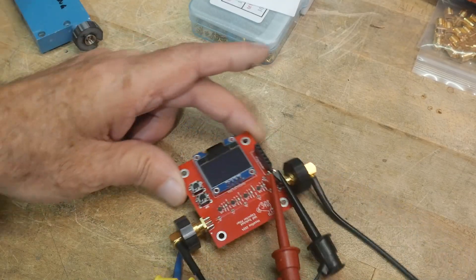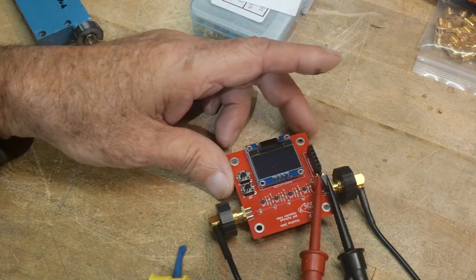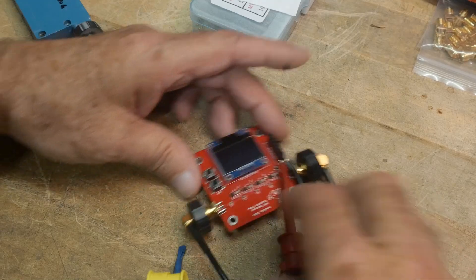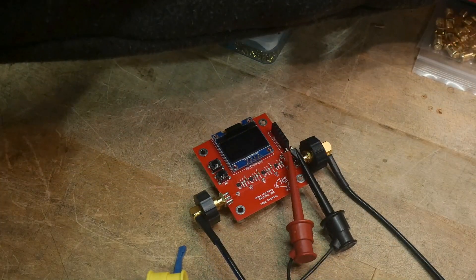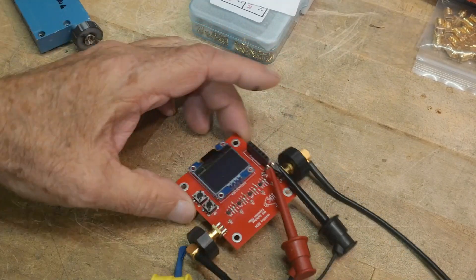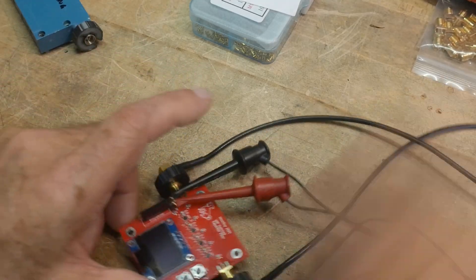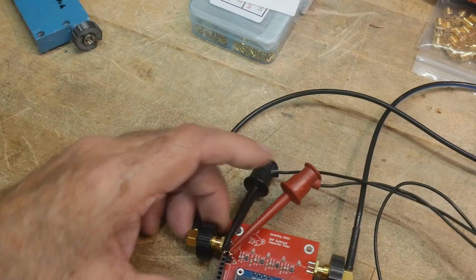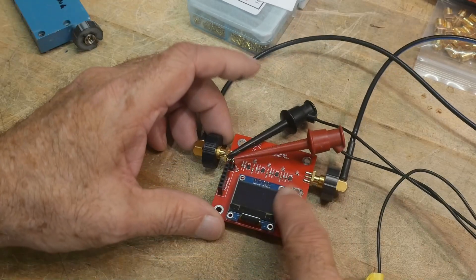Alright, I wrote some software, so let's see here. First of all, we need to turn on the power. What the software will do is read the buttons, so I can go up or down.